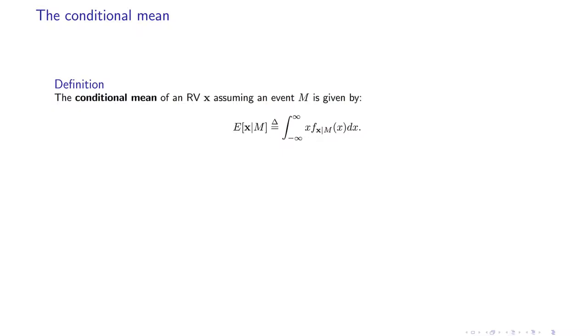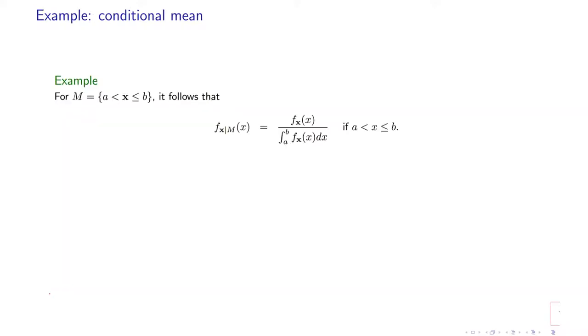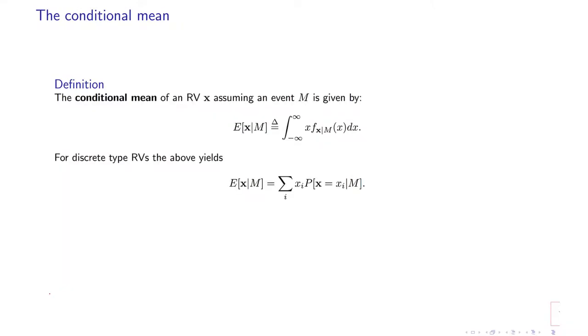The conditional distribution of X is a very simple concept, but we need to apply it to practical examples and solve problems. For discrete type random variables, we could use a similar extension. The only difference is that here we have an additional condition.